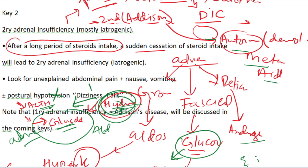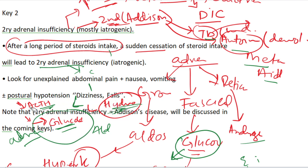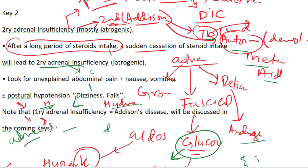Remember: adrenal insufficiency occurs due to a cause such as TB, autoimmune disease, or metastatic cancer, and it develops over months. An Addisonian crisis happens within a day. You must not stop steroid intake abruptly — always taper the dose. Look for unexplained abdominal pain, nausea, or vomiting as warning signs. Primary adrenal insufficiency — Addison's disease — will be discussed in the common case.